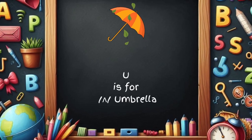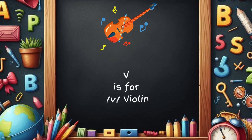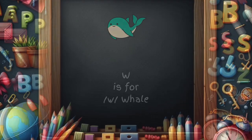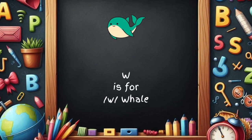U is for umbrella, u-u-umbrella. V is for violin, v-v-violin. W is for whale, w-w-whale.